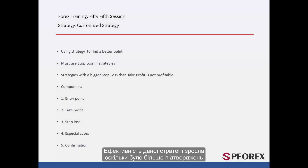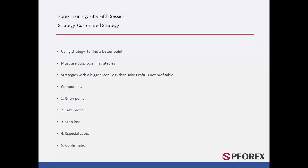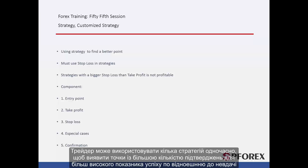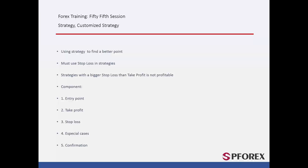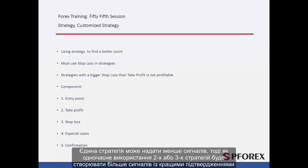The efficiency of the given strategy increased as there were more confirmations. A trader can utilise some strategies concurrently to detect spots with more confirmations for a higher rate of success over failure. A sole strategy may give fewer signals, while using two or three strategies simultaneously would generate more signals with better confirmations.